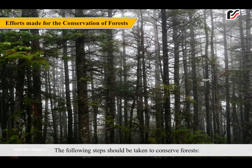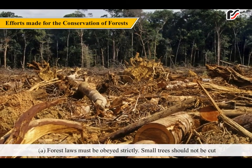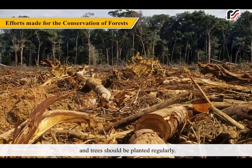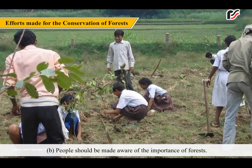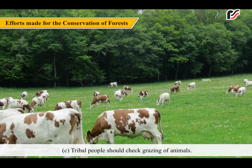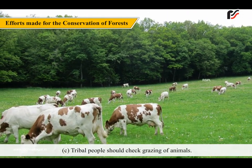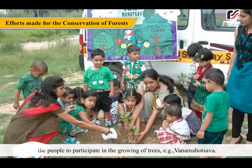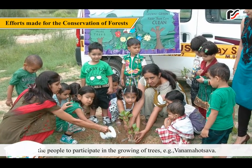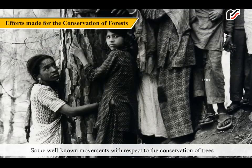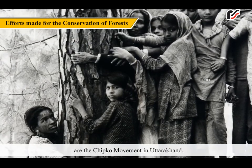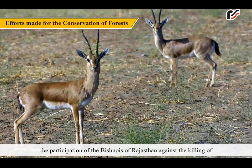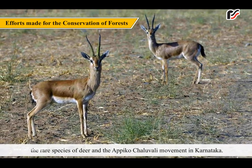The following steps should be taken to conserve forests: A. Forest laws must be obeyed strictly, small trees should not be cut, and trees should be planted regularly. B. People should be made aware of the importance of forests. C. Tribal people should check grazing of animals. The government is encouraging people to participate in the growing of trees, for example through the Van Mahotsav. Some well-known conservation movements are the Chipko movement in Uttarakhand, the participation of the Bishnois of Rajasthan against the killing of rare deer species, and the Appiko-Chaluvali movement in Karnataka.